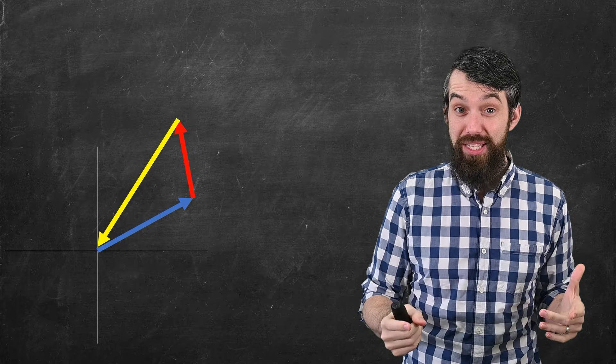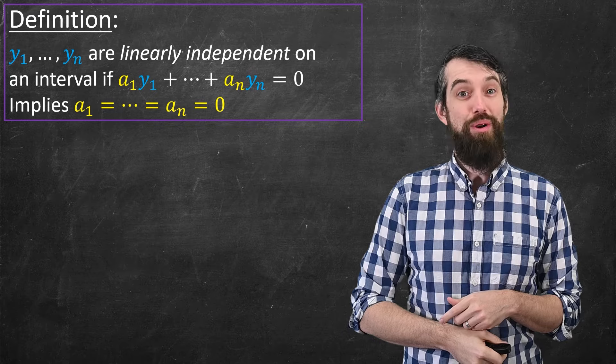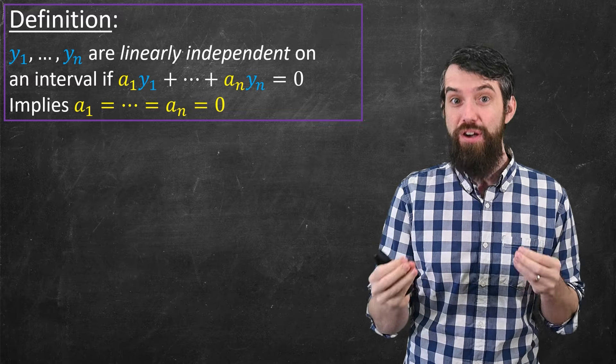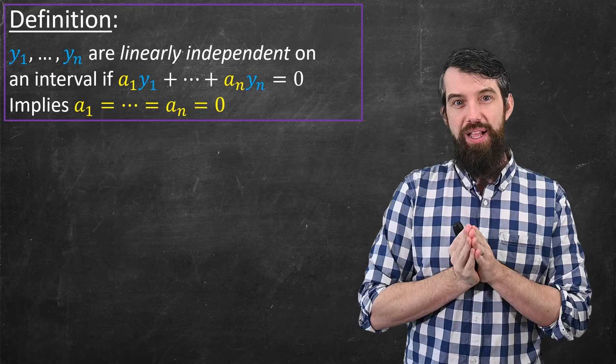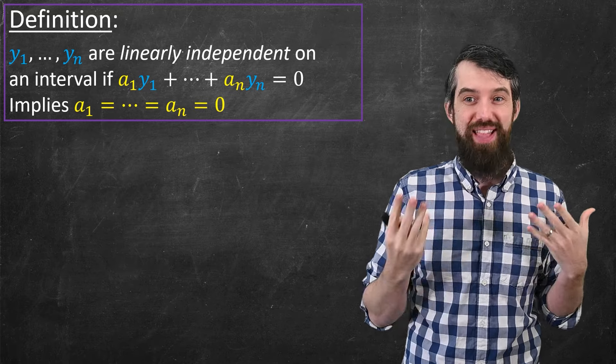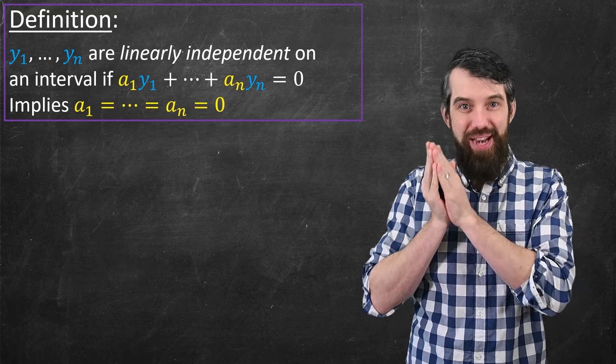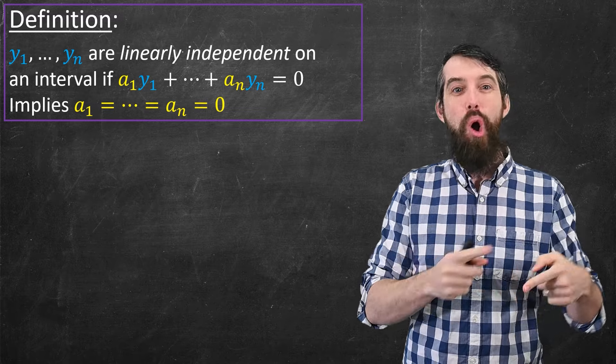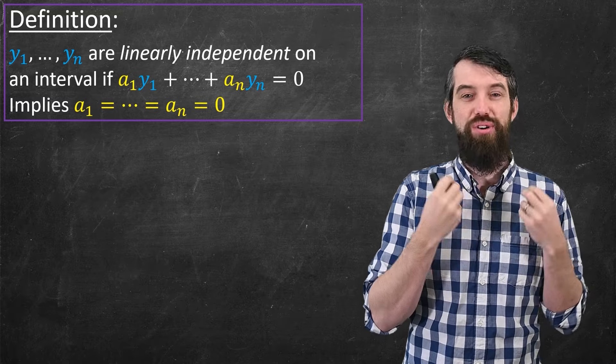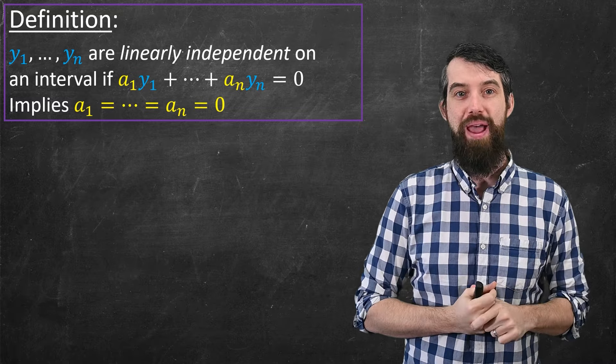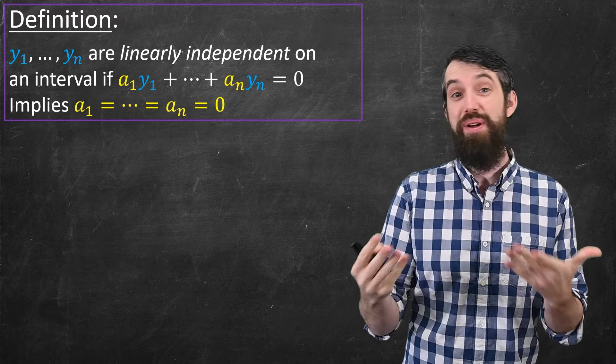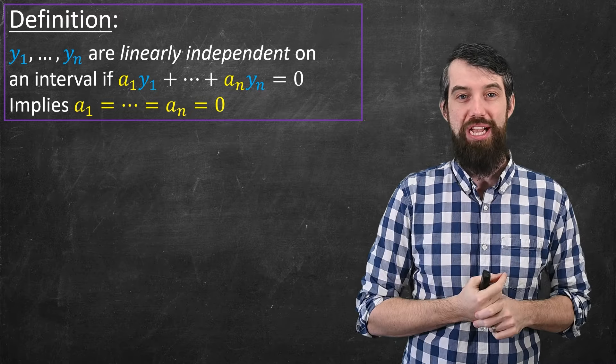So now let's use this idea, but going back to our context of functions. Imagine y₁ down to yₙ are functions. These n functions are linearly independent if the only way you could take a linear combination that adds up to zero—so a₁y₁ all the way up to aₙyₙ—the only linear combination that adds up to zero is the trivial one, where all the coefficients are zero: a₁ is zero all the way up to aₙ is zero. That's what it means to be linearly independent.